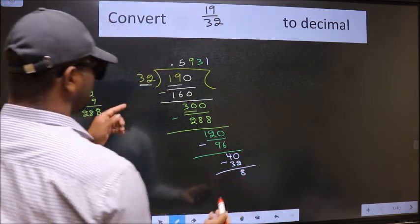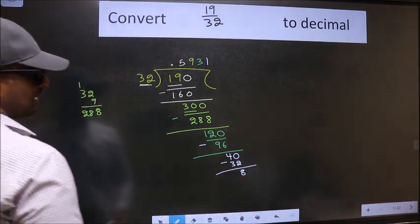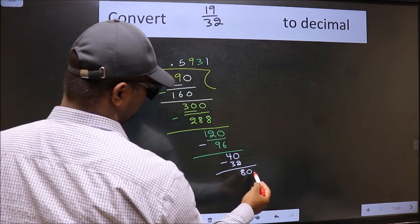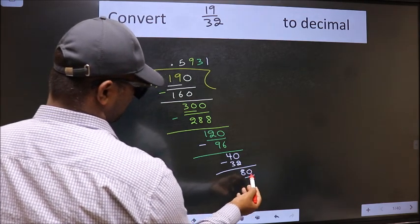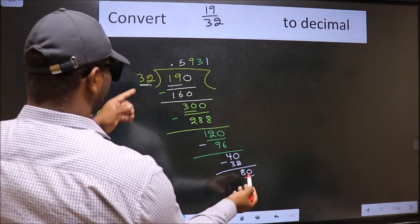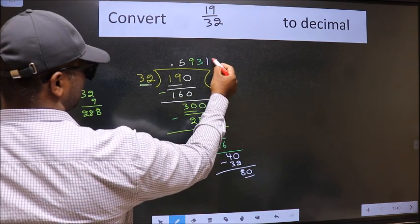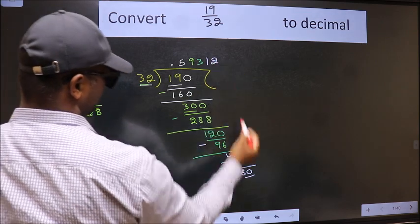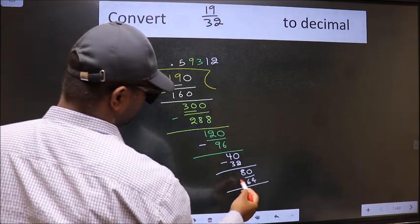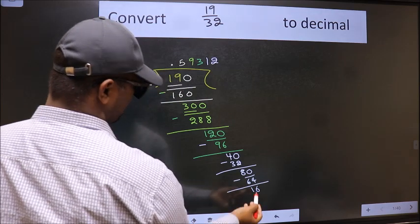8 is smaller than 32 and we already have the decimal, so take 0. So 80. A number close to 80 in the 32 table is 32 twos: 64. Now we should subtract. We get 16.